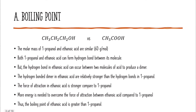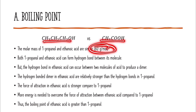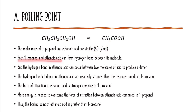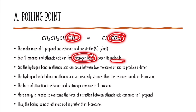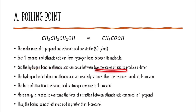Let's look at the first example: 1-propanol versus ethanoic acid. The molar mass for these two compounds is similar at 60 grams per mole. Both 1-propanol and ethanoic acid can form hydrogen bonds between their molecules, but in ethanoic acid hydrogen bonds occur between two acid molecules to produce a dimer. The hydrogen-bonded dimer in ethanoic acid is relatively stronger, so more energy is needed to overcome the force of attraction, and the boiling point of ethanoic acid is higher. The key concept here is the hydrogen-bonded dimer.